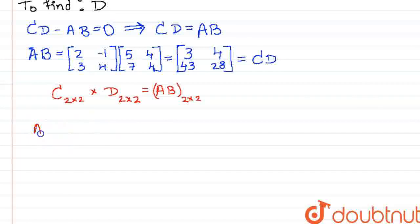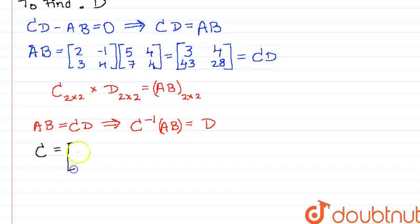Now, if we take the equation AB is equal to CD and pre-multiply C inverse to both the sides, we get C inverse AB is equal to C inverse CD, which is D, because C times C inverse or C inverse times C are both the identity matrix.